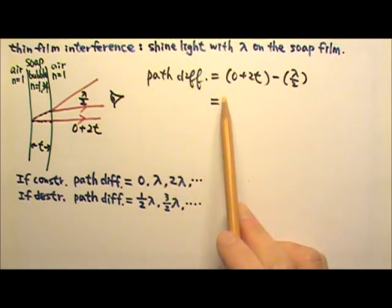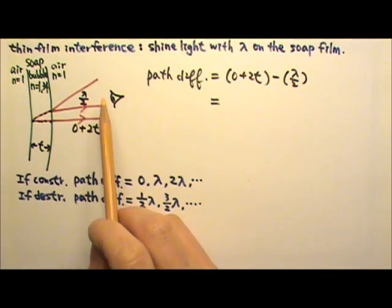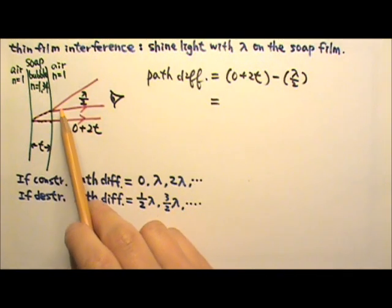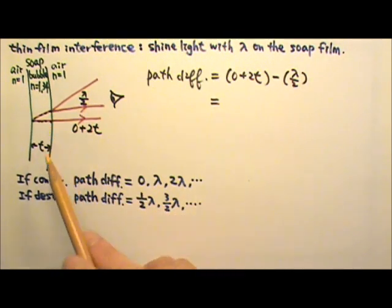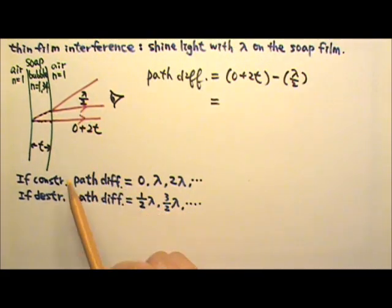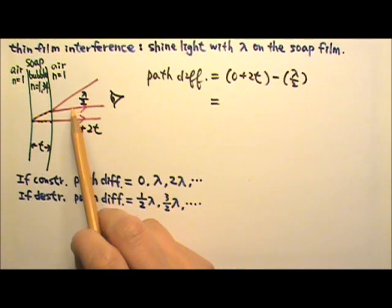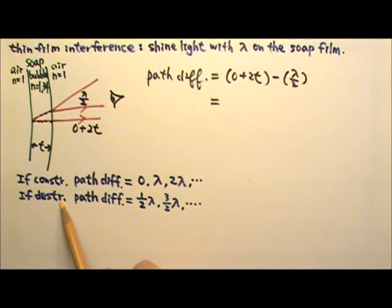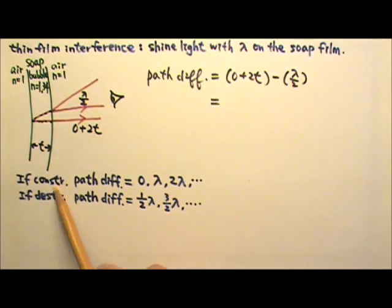The path difference should determine whether the interference is constructive or destructive. If it is constructive, when you look at the soap film you would see the light being reflected — for example, if you shine green light at the film, you would see green on it. That's constructive interference. If you see black, you do not see the light being reflected — that is destructive interference. So if we do not see reflection or want to eliminate reflection, it is destructive. If we do see the color of light on the film, it is constructive.